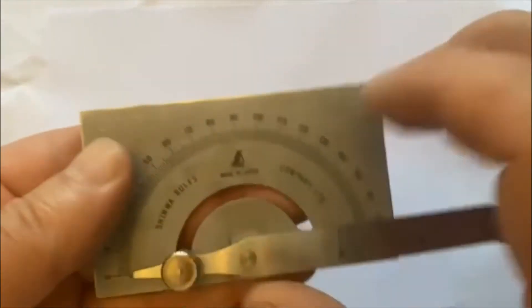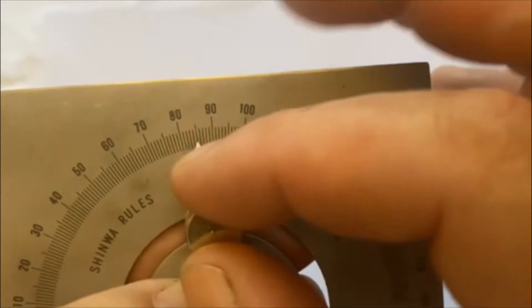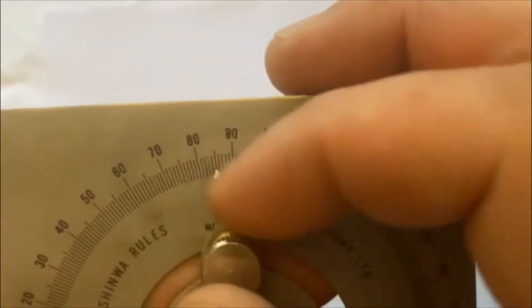Set the protractor at the angle that you want. Here I'm showing five degrees, which is a nice, reasonably tight spiral that I like a lot for scroll work and blacksmithing.